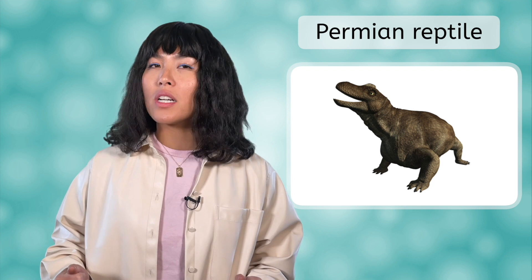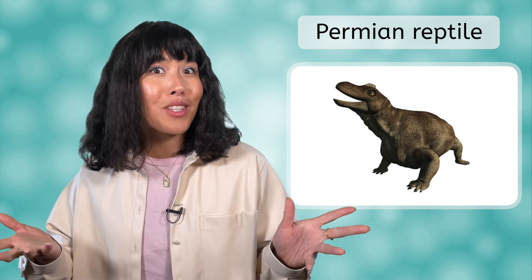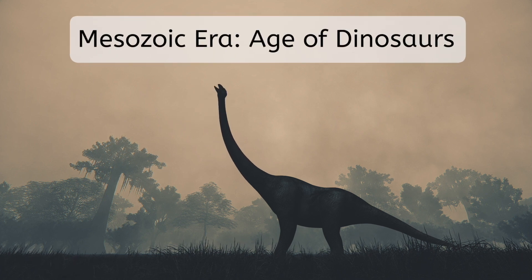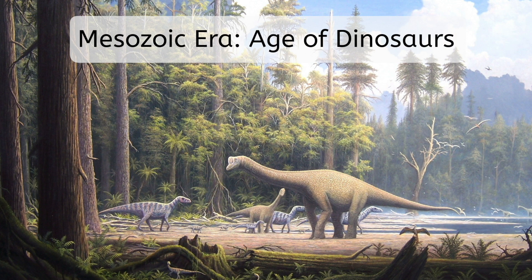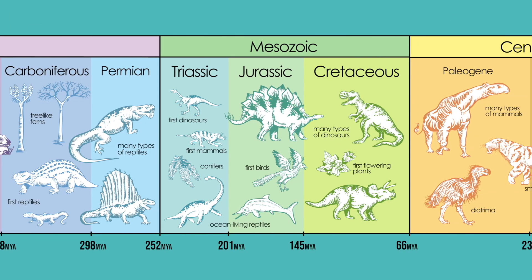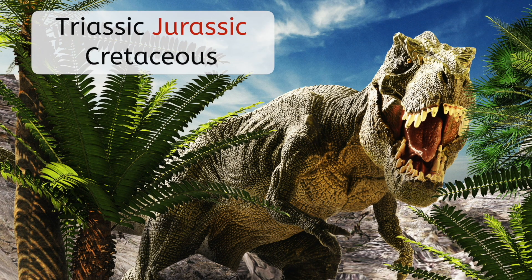After the Permian extinction, one group of animals has clearly fared better than the rest: reptiles. Welcome to the Mesozoic era, age of the dinosaurs. Dinosaurs will dominate this entire era, which lasts for almost 200 million years. It is divided into the Triassic, Jurassic, and Cretaceous periods — one of those names might sound a little familiar if you are into dinosaur-themed movies.